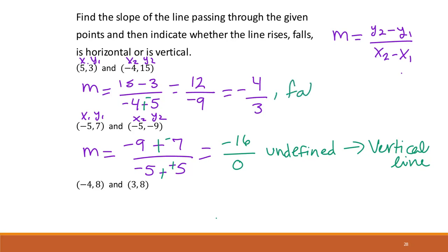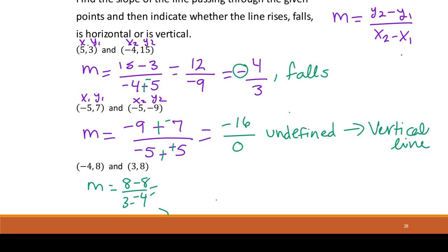Because it's negative on top, we know it falls. Let's try the last one: I'm going to do 8 minus 8 over 3 minus negative 4. I see 8 minus 8 is 0 over — making the negative a plus gives positive 7. Anytime we have 0 on top, that means our slope is 0, because 0 divided by anything is still 0, which indicates a horizontal line.